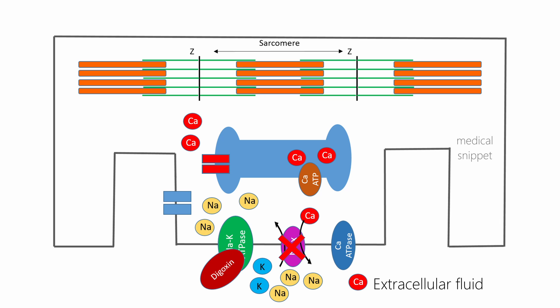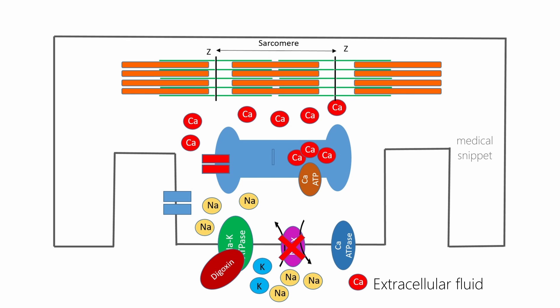Sarcoplasm calcium ion concentration increases, which in turn is pumped into the L-tubule via the ATP-mediated calcium pump. So calcium storage increases in the L-tubule. So during subsequent depolarization more calcium is released from the L-tubule into sarcoplasm. More calcium means increased contractility. This is how digoxin causes positive ionotropic effect.